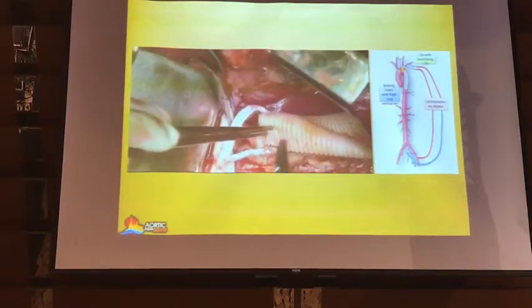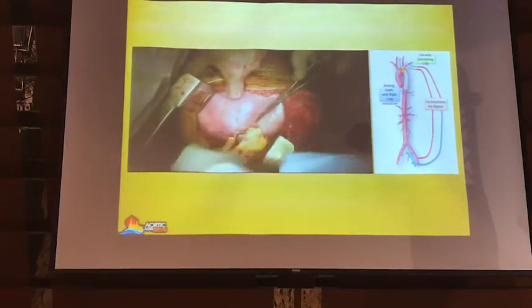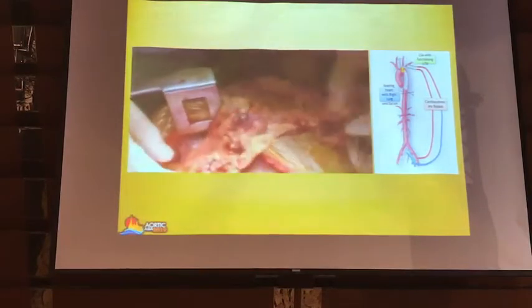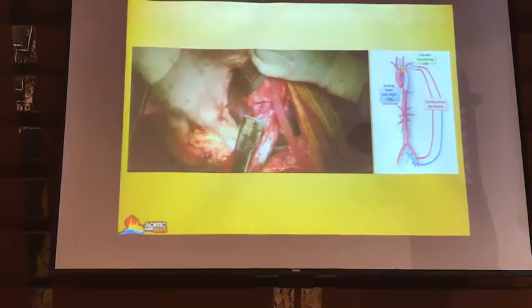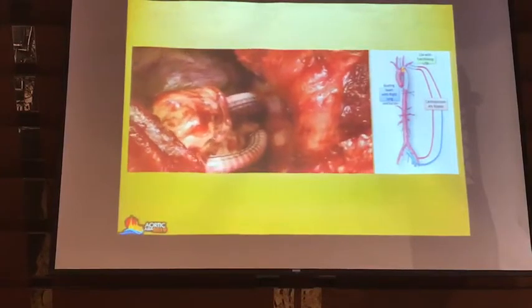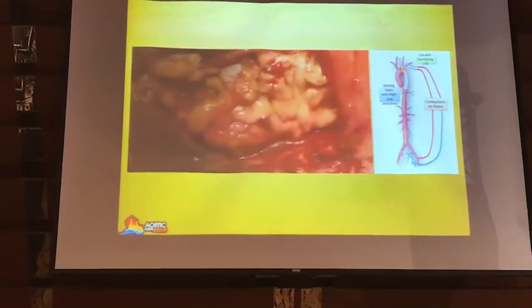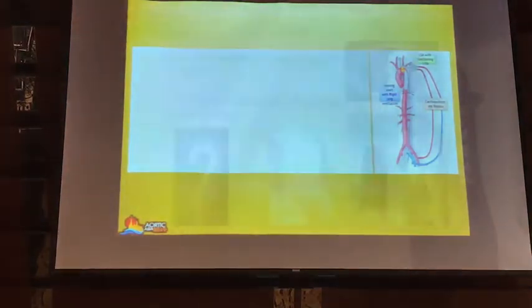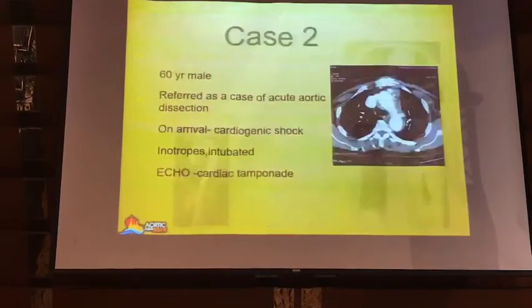We found that the fistula was not very big, so we decided to interpose a graft and cover it with omentum to see whether it would work. If it didn't work, we would address it through a cervical esophagostomy and pull through later on. Then we packed it and kept the patient nil by mouth for about two weeks. He was given parenteral nutrition and recovered very well. He is a plastic surgeon, so he started operating. This is the two-year follow-up angiogram — there is no evidence of any fistula, and he has done very well.